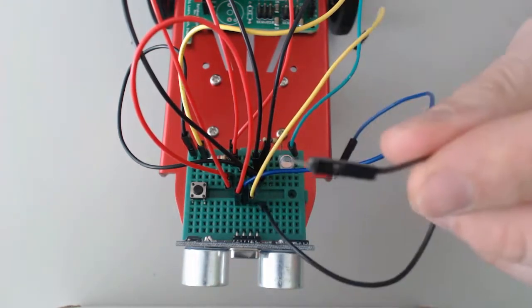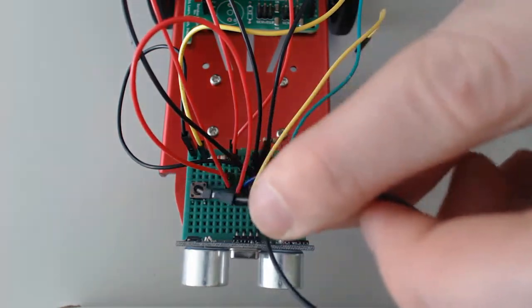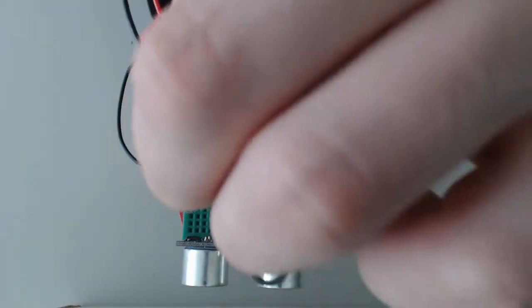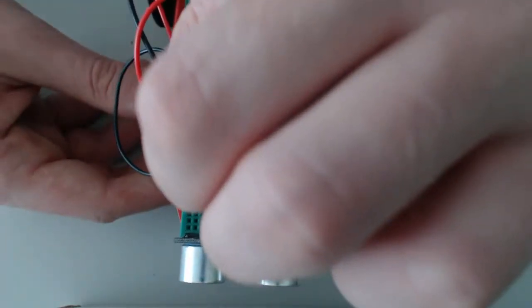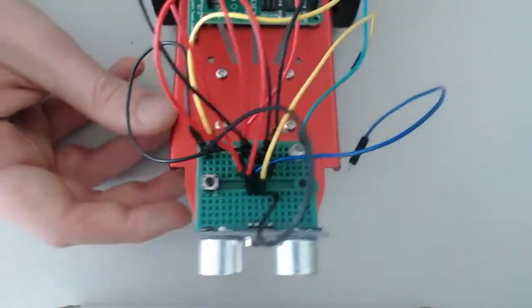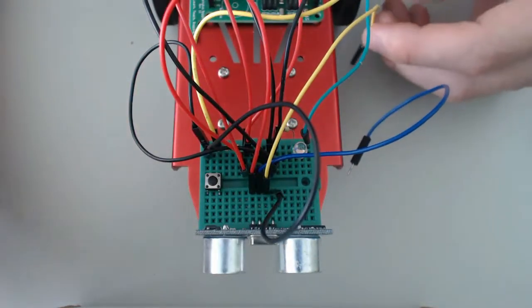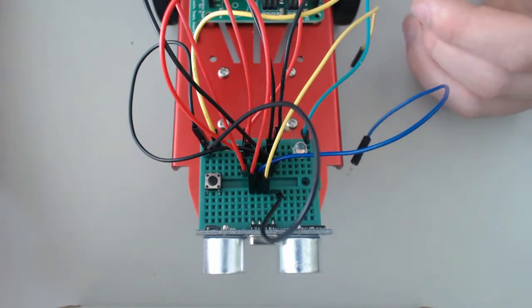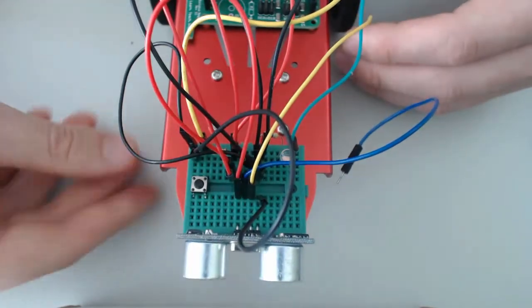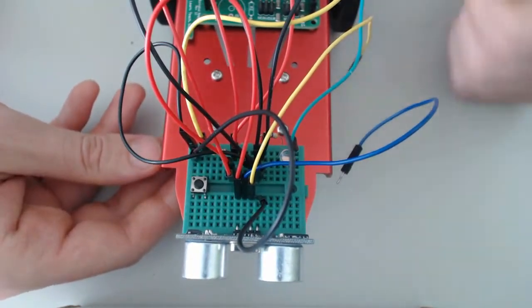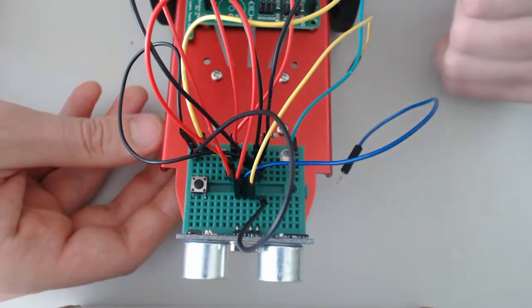Likewise, I'm going to take this black wire and find another black wire on the red board and stick it next to there. Because I've been staying consistent with my wire colors, I know that black will always mean ground, so any row that has a black wire on it should go to ground.